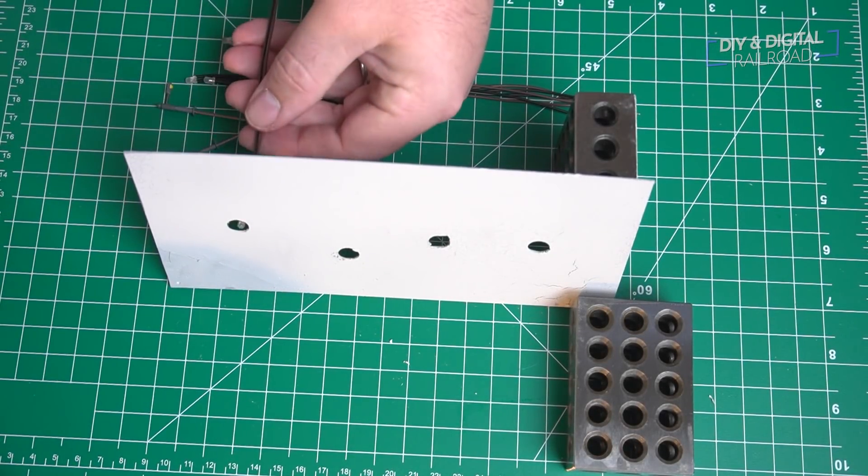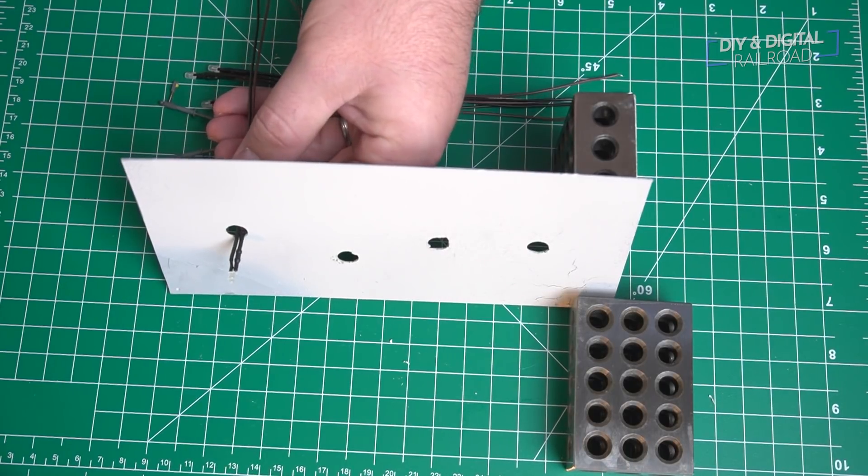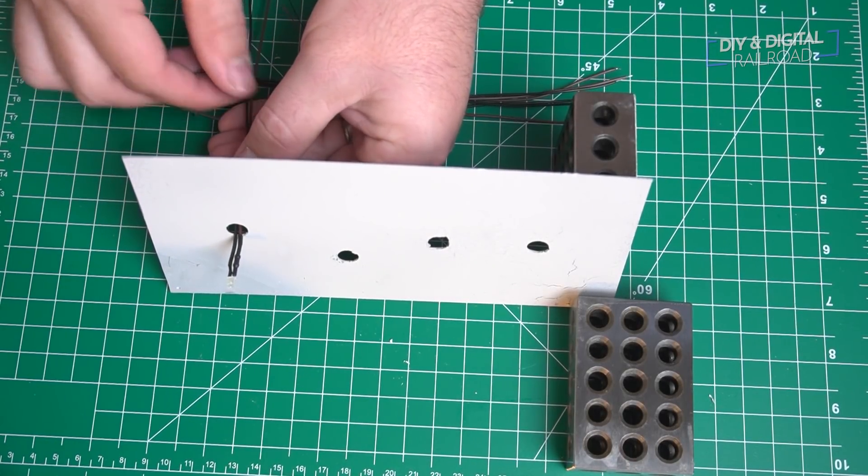Now I've got the entire styrene sheet up on its side and I'm using some of those one, two, three blocks to hold it in place. And I've got all of my lights right here and it's time to go ahead and attach them.